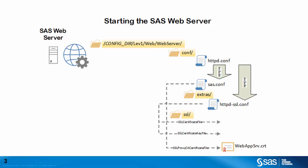Looking at the httpd-ssl.conf file, there are two further directives of importance: SSLCertificateFile and SSLCertificateKeyFile. When we use the SAS deployment wizard to configure HTTPS for the SAS web server, these two directives point to the TLS certificate file and private key file for the SAS web server. The SAS deployment wizard places these two files into the ssl subdirectory and names the files using the fully qualified hostname of the machine running the SAS web server. This completes the overview of the files that are read and consumed by the SAS web server when it starts up.